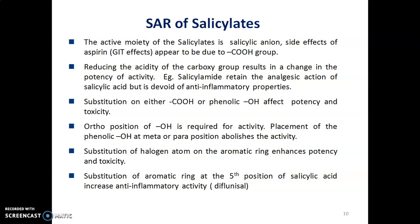Now let us discuss the SAR of salicylates. The active moiety of salicylates is the salicylate anion, and the side effects of aspirin are due to the presence of the COOH group. Reducing the acidity of the carboxyl group results in a change in potency — for example, salicylamide retains analgesic action but is devoid of anti-inflammatory properties. Substitution on either COOH or phenolic OH will affect potency and toxicity. The ortho position of OH is required for activity; placement of phenolic OH at the meta or para position abolishes activity. Substitution of a halogen atom on the aromatic ring enhances potency and toxicity, whereas substitution at the fifth position of the salicylic acid ring increases anti-inflammatory activity — example is diflunisal.